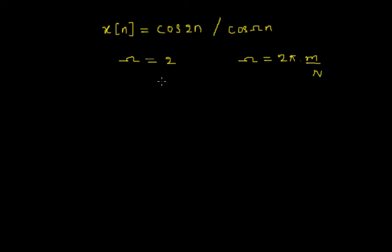If we look back in our case, omega is equal to 2, so we do not have pi. Therefore, we cannot express it in terms of 2 pi. So I can say that the given signal is aperiodic.